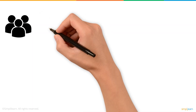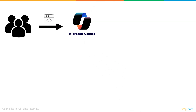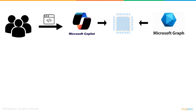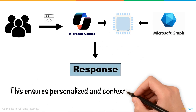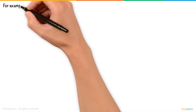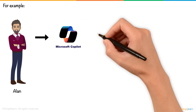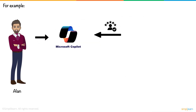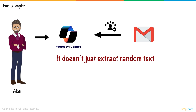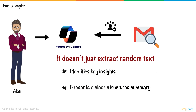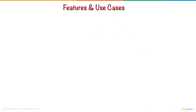When a user gives a command, Copilot processes it using AI, retrieves relevant information from Microsoft Graph, and generates a response. This ensures personalized and context-aware assistance. For example, when Alan asks Copilot to summarize client feedback from his emails, it doesn't just extract random text — it analyzes the emails he has received, identifies key insights, and presents a clear, structured summary.